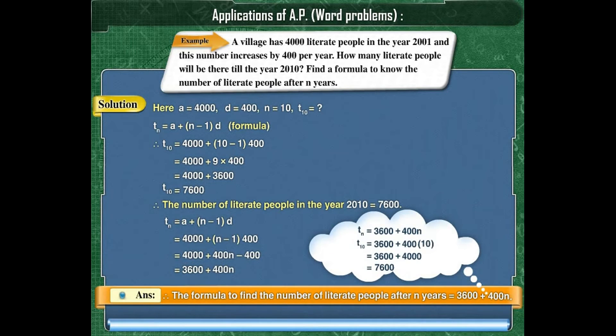If we substitute N = 10 in this formula, we get the same value: T10 = 7,600.